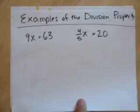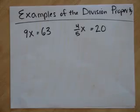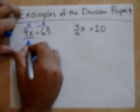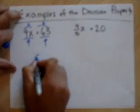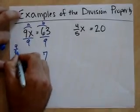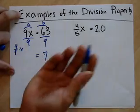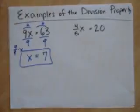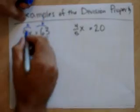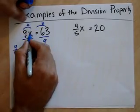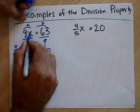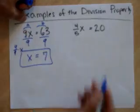Here are some examples of the Division Property. Looking at this one, I'm going to divide both sides — A equals B. I can divide them both by a C. 63 divided by 9 is 7. And 9X over 9 is the same as 9 over 9 times X — that's 1, so 1X. X equals 7.